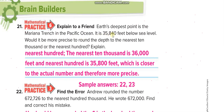Earth's deepest point is the Mariana Trench in the Pacific Ocean — 35,840 feet below sea level. The question asks: is it more precise to round to the nearest ten thousand or the nearest hundred? Ten thousand is a bigger place value; hundred is a smaller place value. The smallest place value is always more accurate, so the answer is nearest hundred.